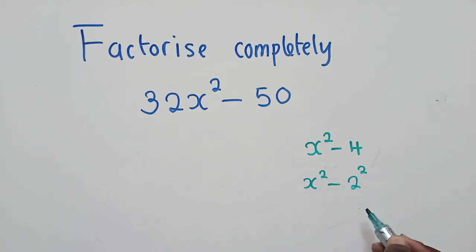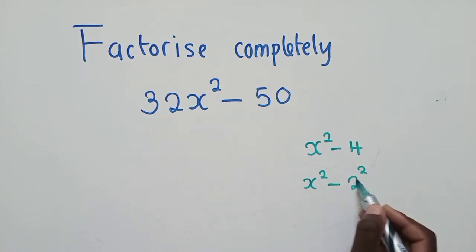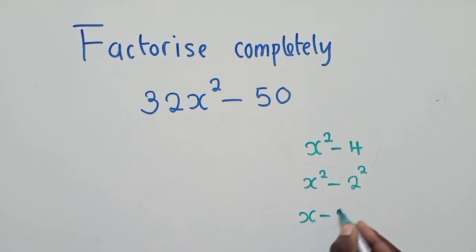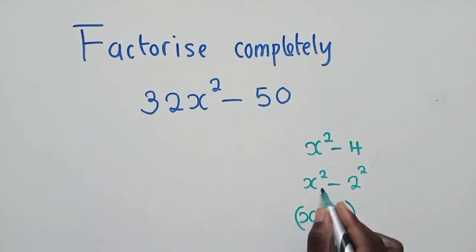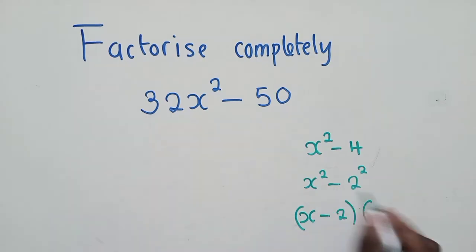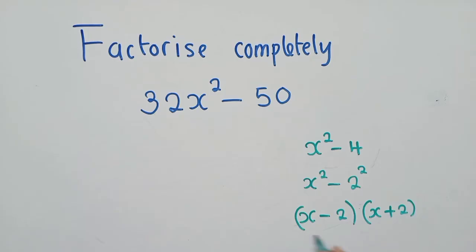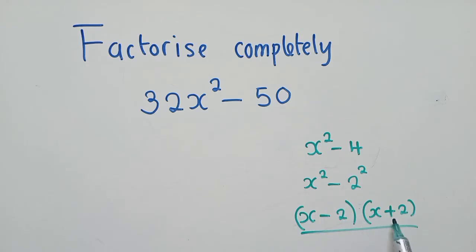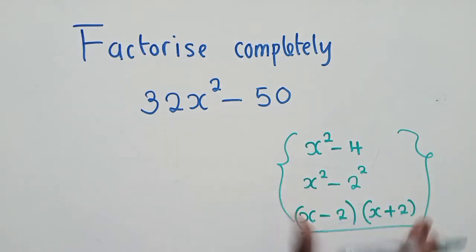So here is a power 2 and here is a power 2, and when we work it out it gives us 4. So once you reach this point, you say x minus 2 — you copy what is here — and then the same thing, you copy it again but this time you put a plus. So I've just copied the bases, x minus 2 without the powers, and written it again with a plus. This is what we call difference of two squares.